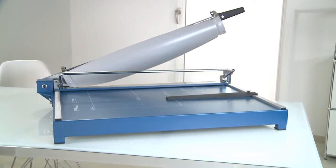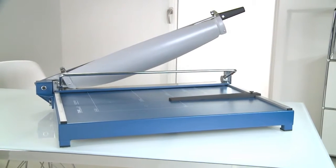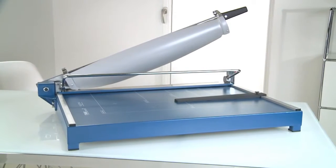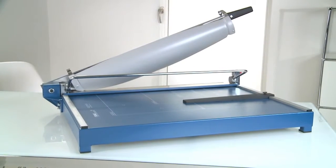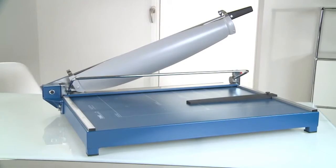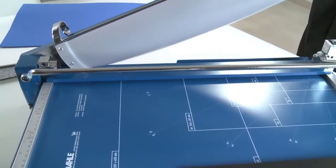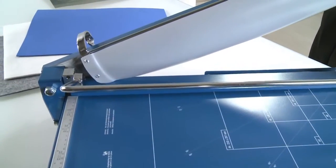The Dahle 599 guillotine is a professional A2 machine providing a cutting length of 700 millimeters up to 3.5 millimeters thick. This is the equivalent of 30 to 35 sheets of paper.